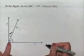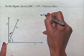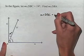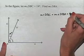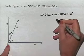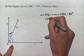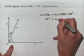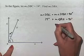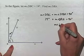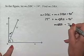Notice that we have the symbol for a right angle here. So what we know is that the measure of angle DBC plus the measure of angle DBA equals that right angle measure of 90 degrees. So we're going to take our 19 degrees for the measure of angle DBC, add that to the measure of angle DBA, and that equals 90 degrees. Subtracting 19 degrees from both sides of the equation gives us our result of 71 degrees.